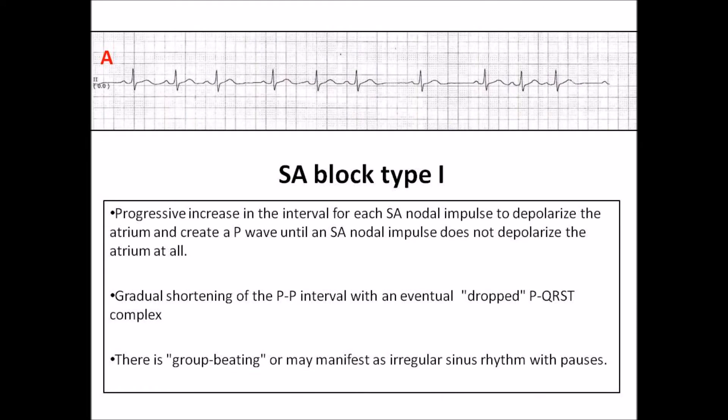SA block type 1. In SA block type 1, there is progressive increase in the interval for each SA nodal impulse to depolarize the atrium and create a P wave, until an SA nodal impulse fails to depolarize the atrium at all. On the surface EKG, there is gradual shortening of the PP interval with an eventual dropped P-QRST complex, with group beating or regular sinus rhythm with pauses.